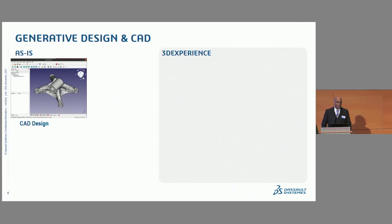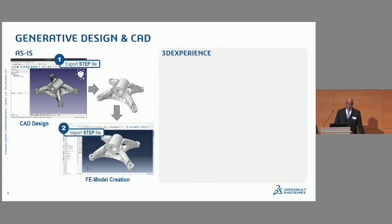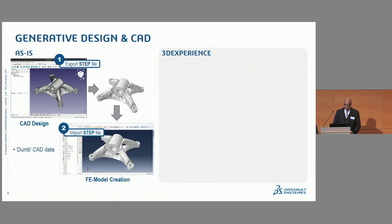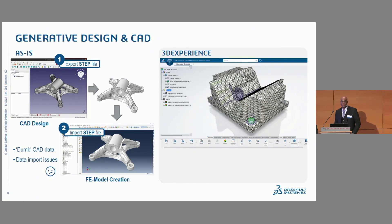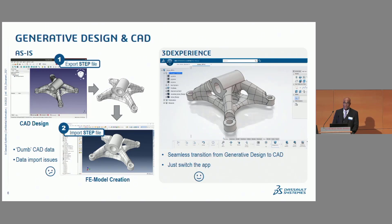Let's have a first look at the first step. We said that we start out with CAD design. Here we have the comparison — the as-is workflow, the cumbersome one. We start with the necessity to export a STEP file and re-import it. As you know from experience, STEP is a dumb CAD format, so there's no option to make small changes along the way, and we may have data import issues. On the other hand, in 3DExperience, we had this part optimized in generative design. All we need to do is switch the app — go from one to the other. We have a seamless transition from generative design to CAD to part design. That's quick and easy, and we are happy about that.